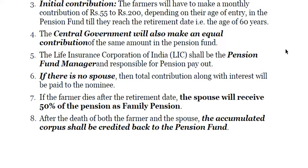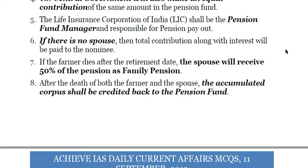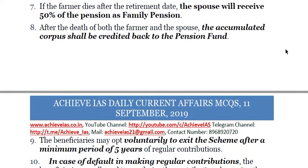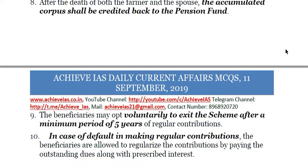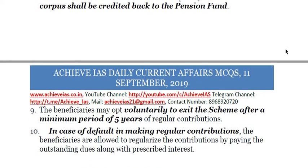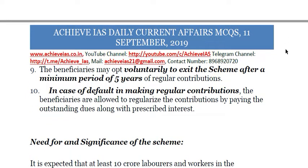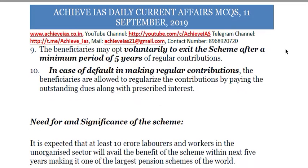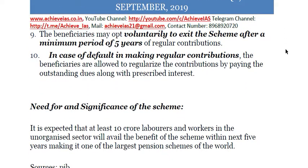If there is no spouse, the total contribution along with interest will be paid to the nominee. If the farmer dies after retirement age, the spouse will receive 50 percent of the pension as family pension. After the death of both farmer and spouse, the accumulated corpus shall be credited back to the pension fund. Beneficiaries may opt voluntarily to exit the scheme after a minimum period of five years of regular contributions. In case of default, beneficiaries are allowed to regularize contributions by paying outstanding dues along with prescribed interest, making it one of the largest pension schemes in the world.